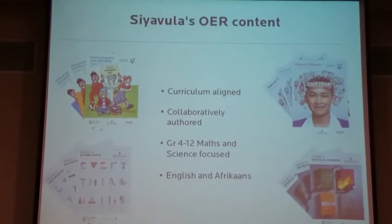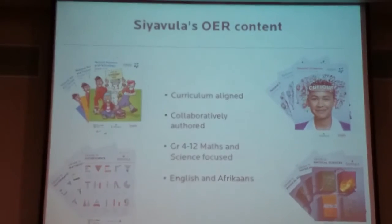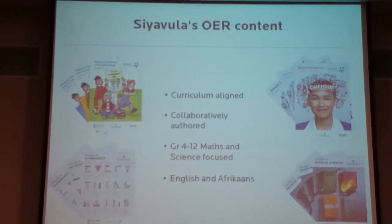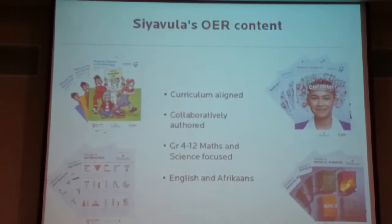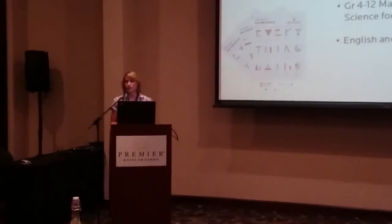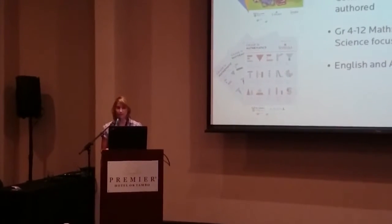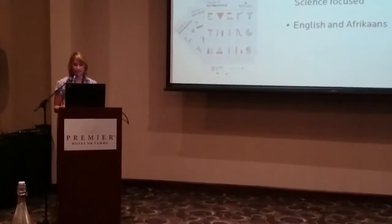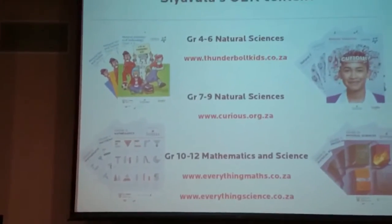Our textbooks are collaboratively authored. Our focus is at school level, grade 4 to 12, and we're predominantly maths and science focused, although we are branching out. The languages we focus on are English and Afrikaans. Some of our textbooks have actually been translated into Isixhosa, especially grade 4 to 6 resources in the Eastern Cape, where many schools have chosen to stick with mother tongue instruction up until grade 6, rather than switching to English in grade 4 for natural sciences.